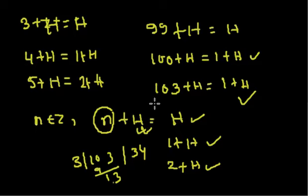So you can see that all the cosets are essentially related to the residue classes modulo 3. We will learn more about this concept, and in the next video we are going to take another example, from which we will learn more about the concept of cosets. Please come back for my next video, and thank you for watching.